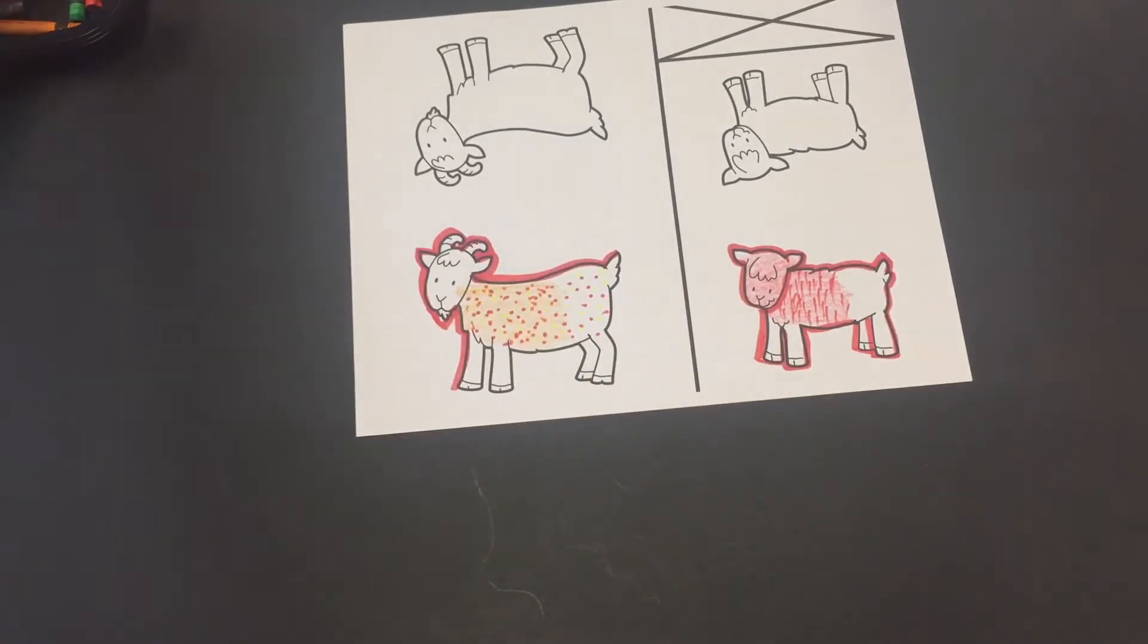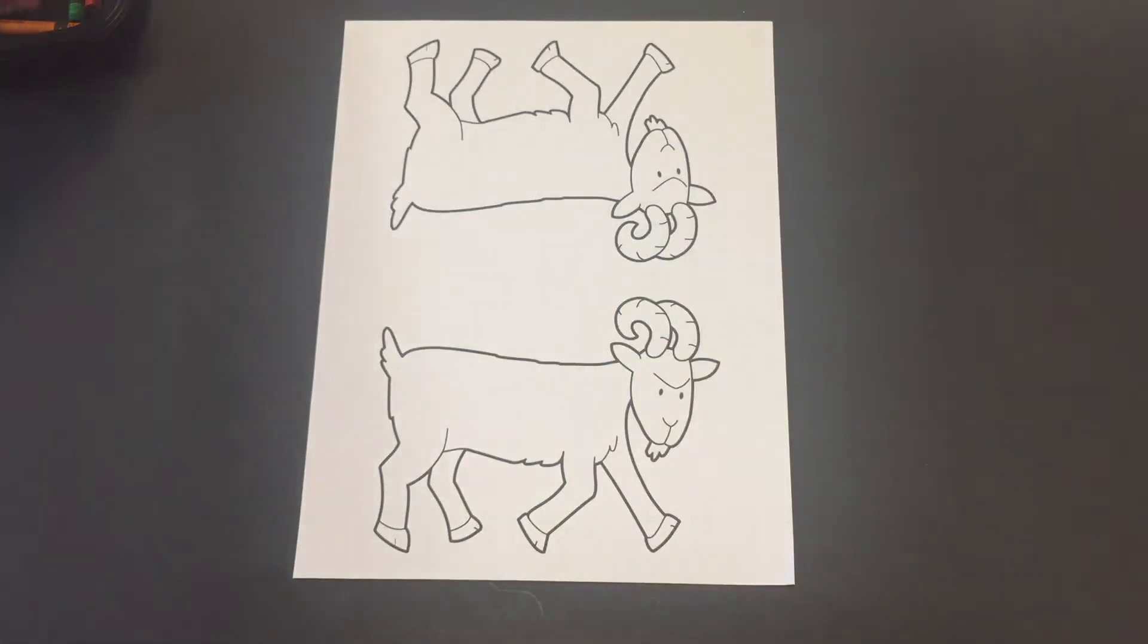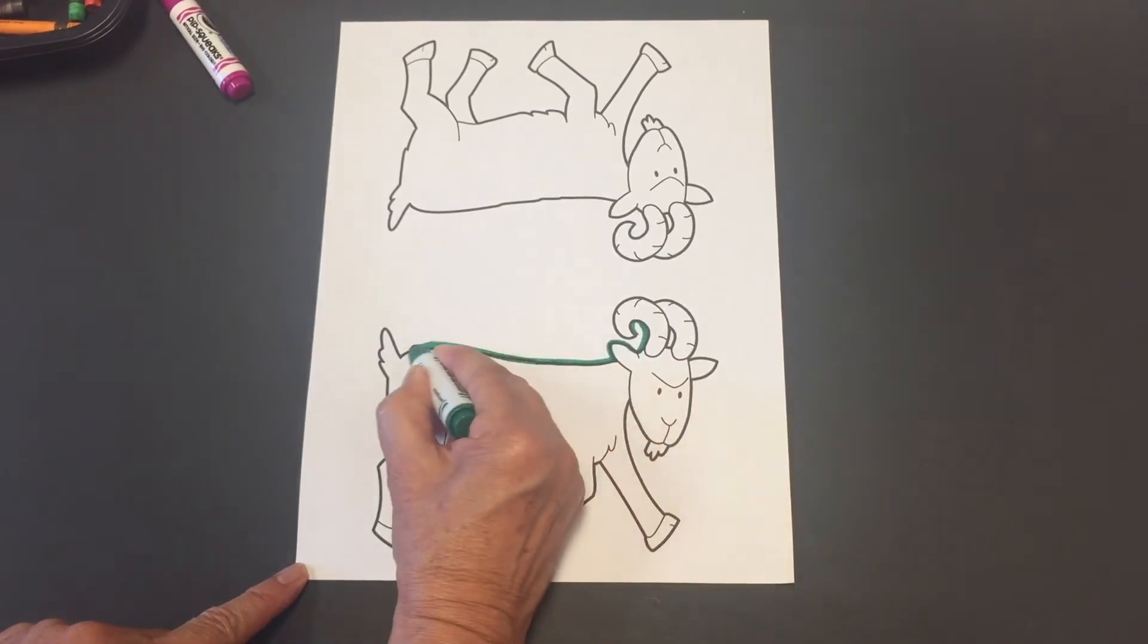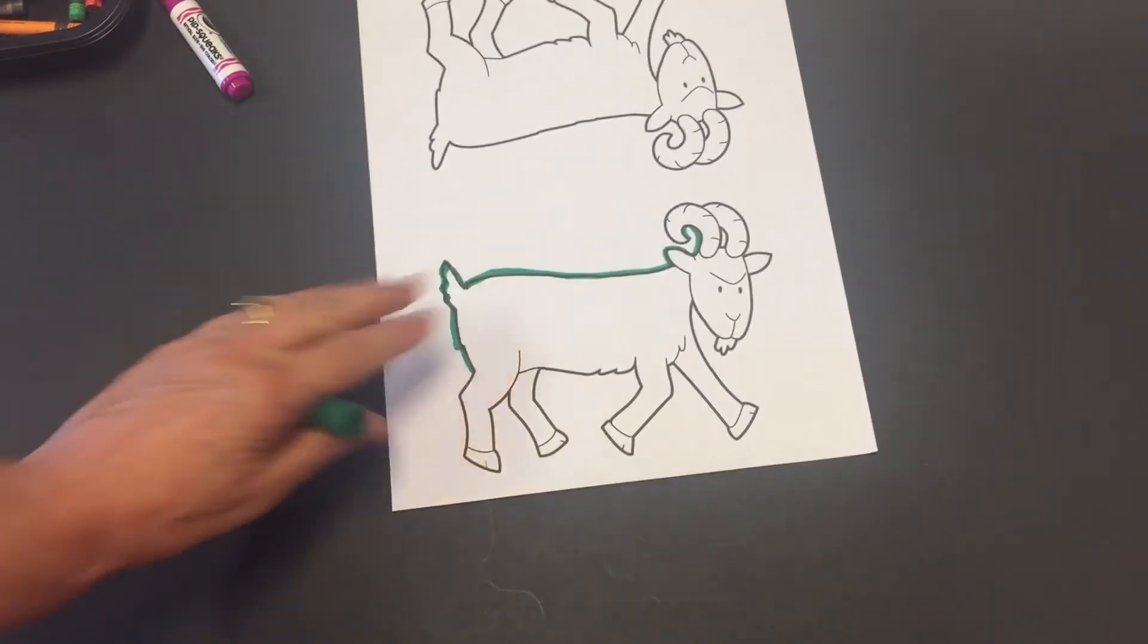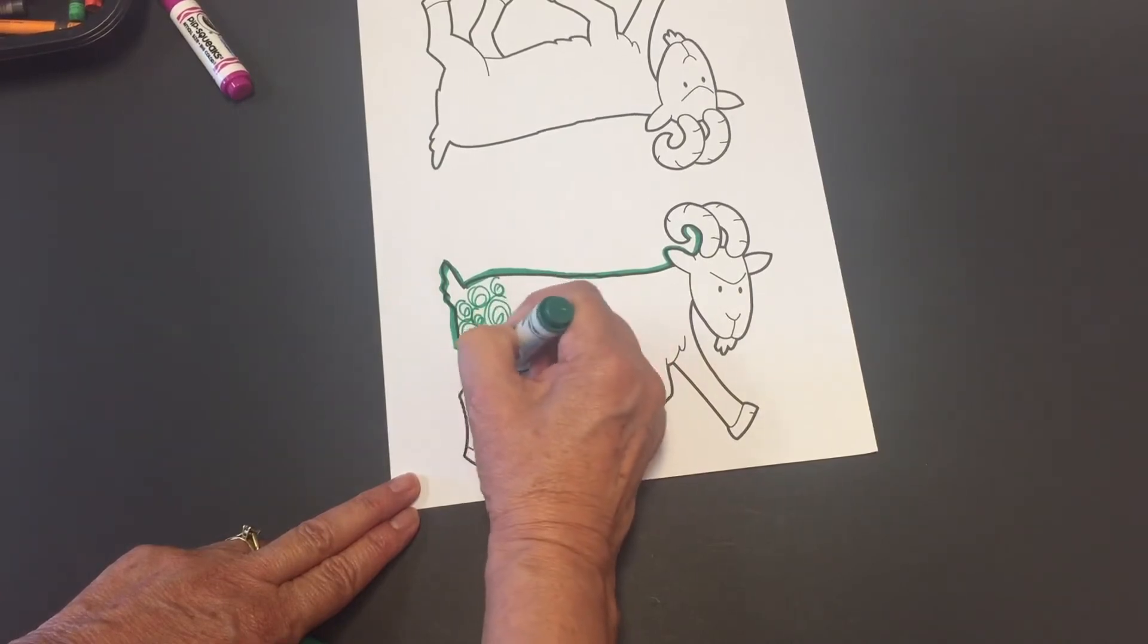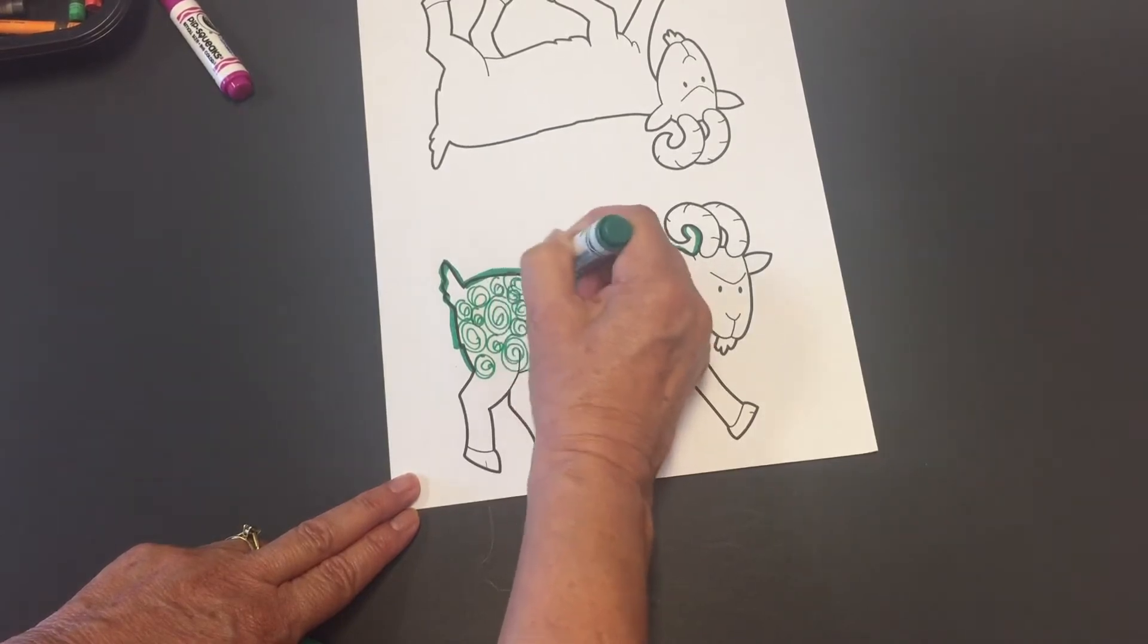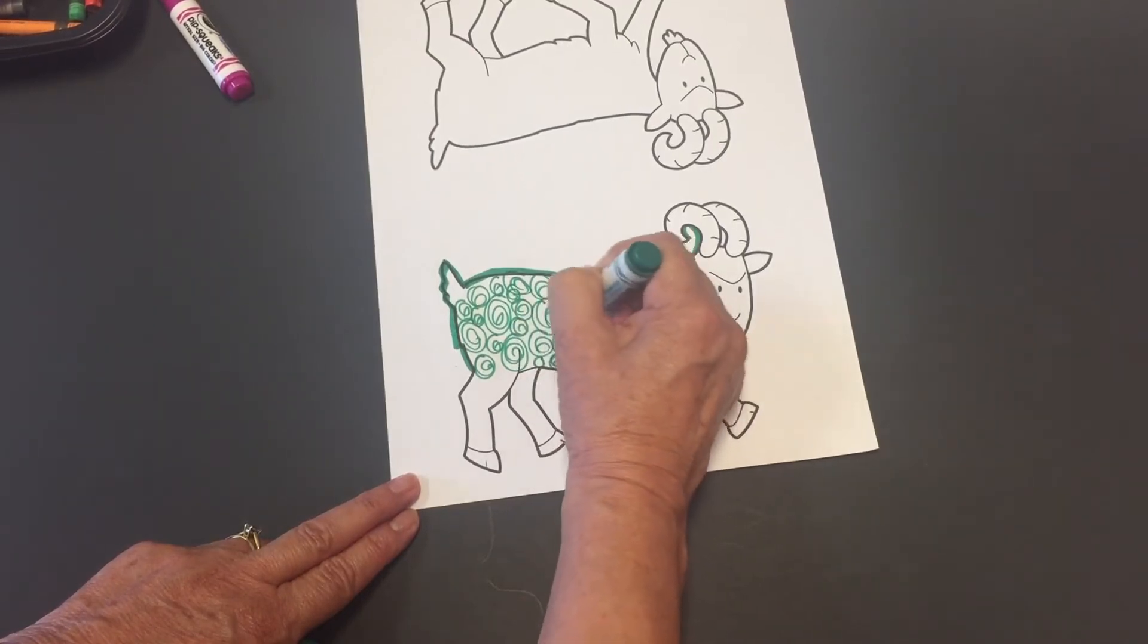Now for the bigger goat, I'm going to pick a different marker, let's say green. And you can outline like that. I'm just going to outline a little bit. And what you can do inside is swirls, swirls like that, little swirls and bigger swirls, just to give it a different look for the older goat. See, and the circles don't have to be perfect. And it looks pretty fun.